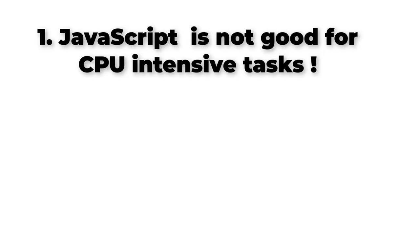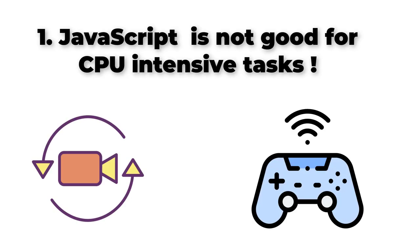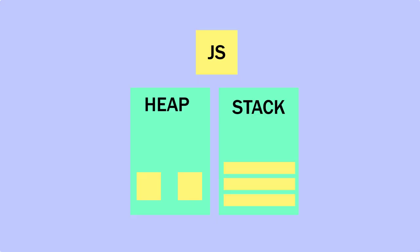The first limitation is that JavaScript is not good for CPU intensive tasks. If you are a seasoned JavaScript developer, you would probably know that by now. The reason for this is that JavaScript is single-threaded, which means it has only one call stack and one memory heap.